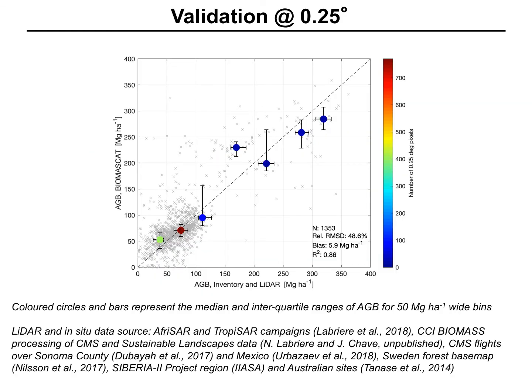Validity of the estimates is quantified by taking averages at 0.25 degree of high-resolution LIDAR maps and large-scale inventory measurements. The plot here shows that there is a strong agreement between the averages taken from the in-situ measurements and the values estimated with our biomass SCAT approach.